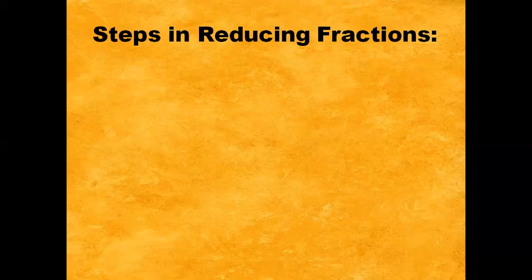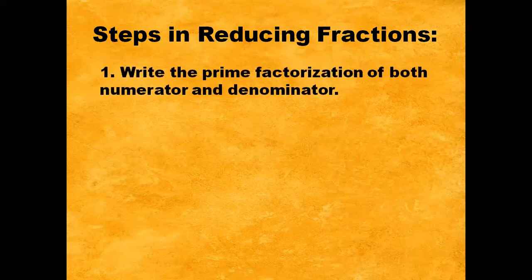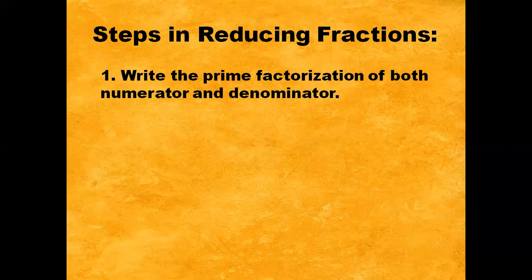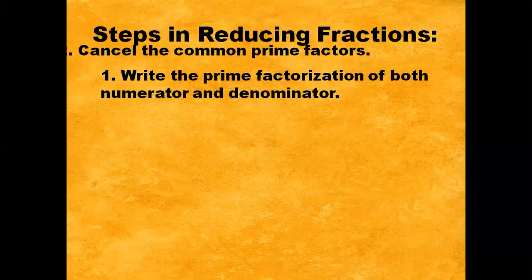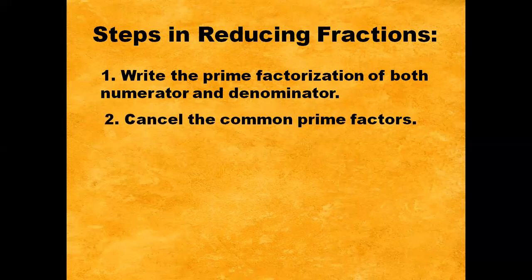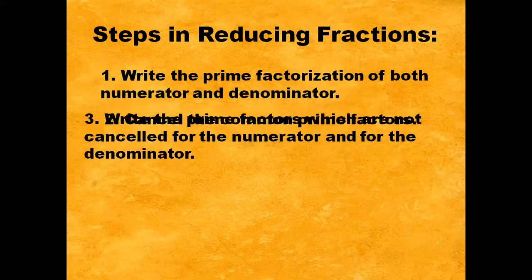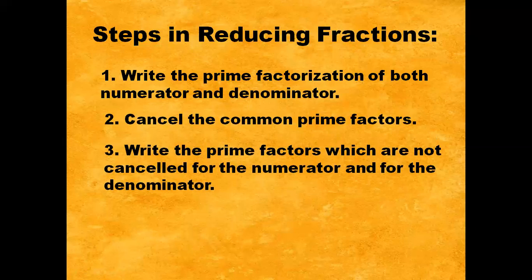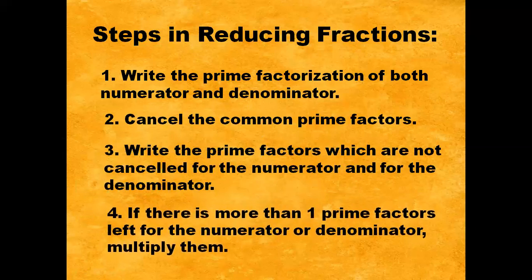Now, what are the steps in reducing fractions? Number 1: Write the prime factorization of both numerator and denominator. Number 2: Cancel the common prime factors. Number 3: Write the prime factors which are not cancelled for the numerator and for the denominator. Number 4: If there is more than one prime factor left for the numerator or denominator, multiply them.